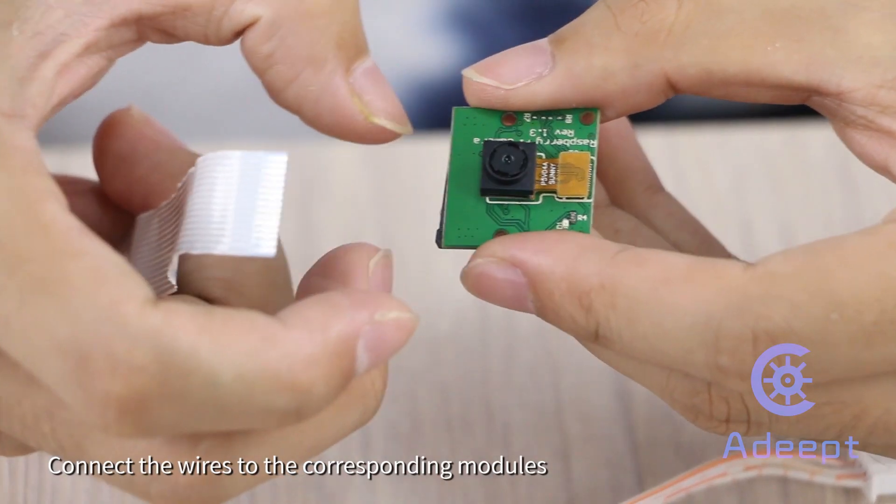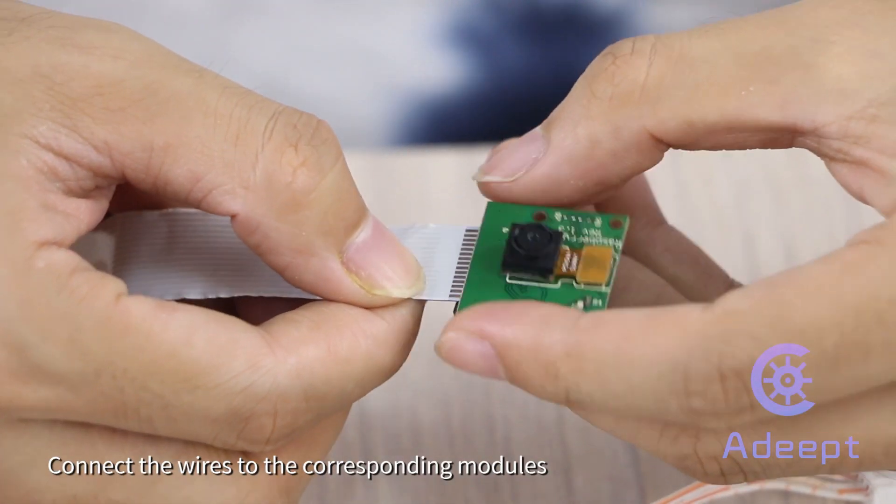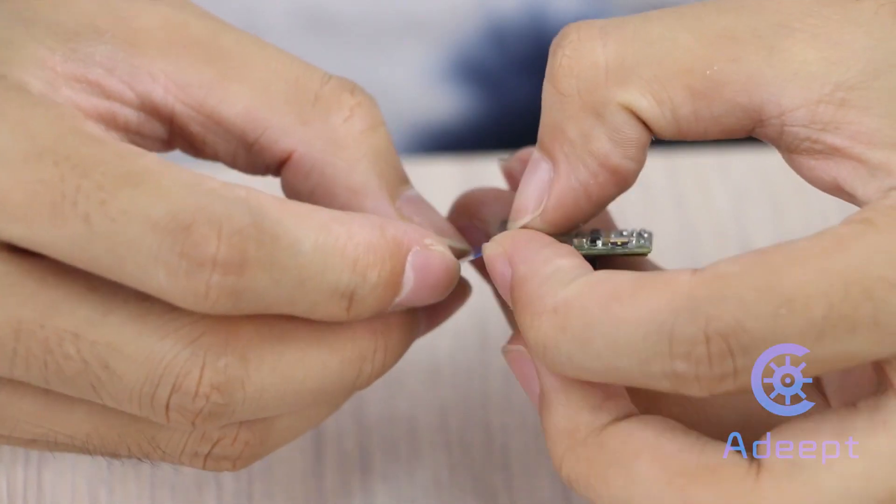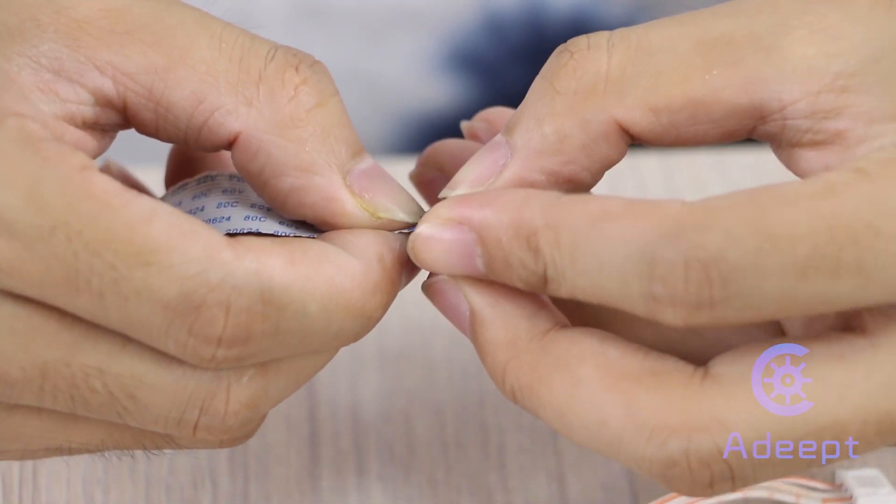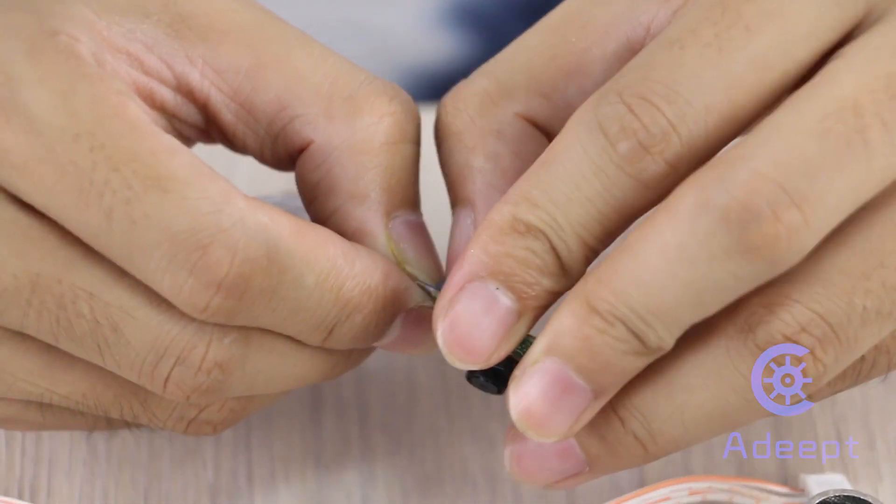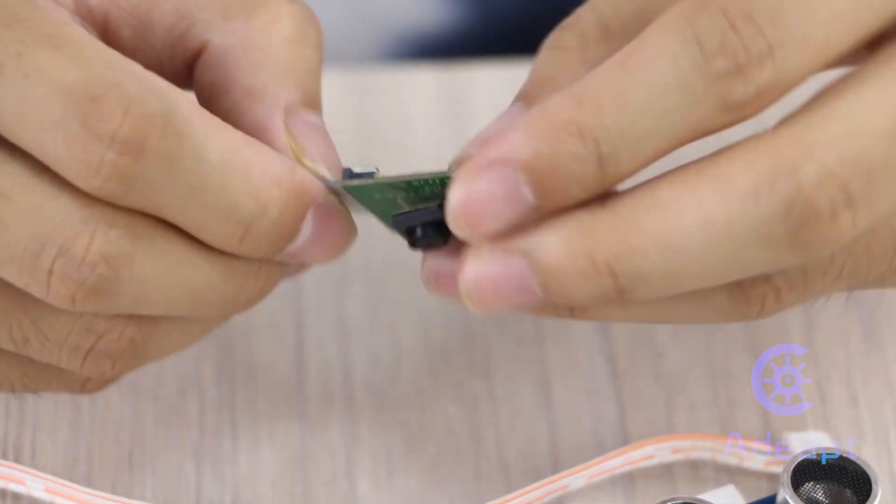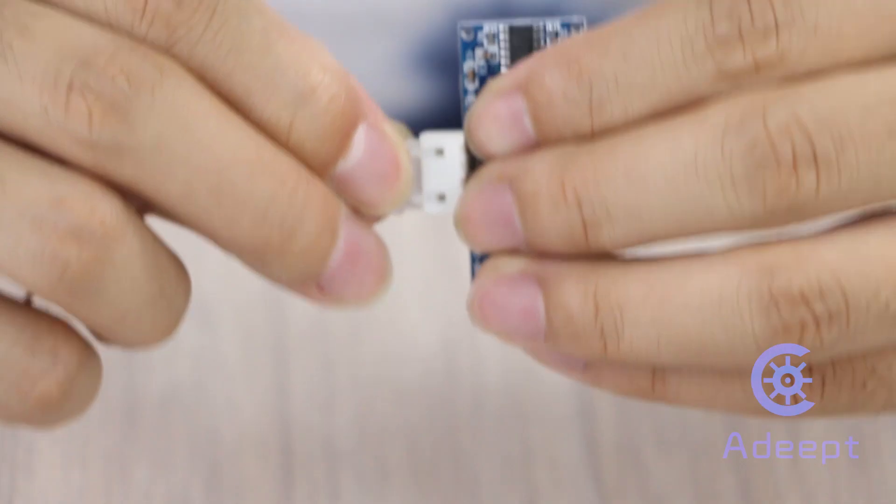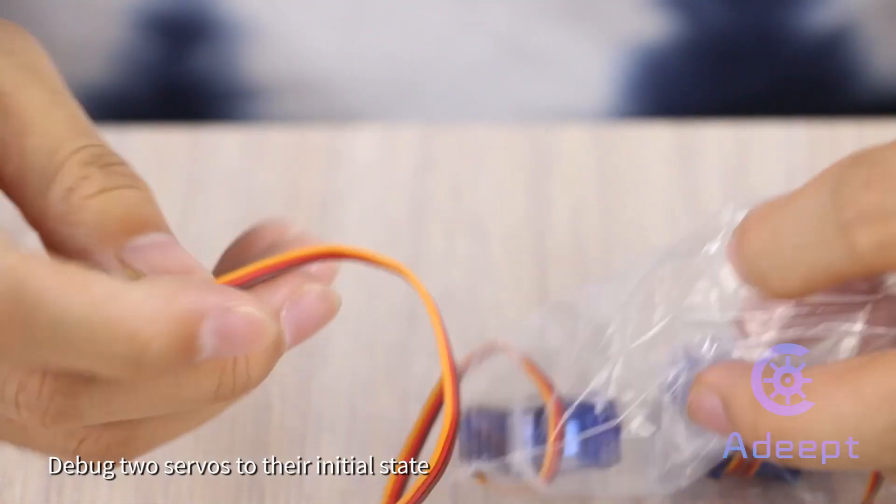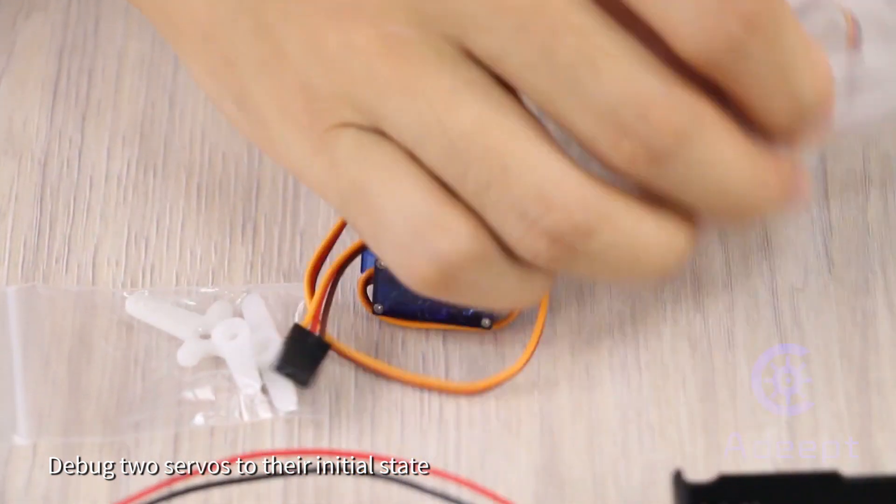Connect the wires to the corresponding modules. Then pack two servos to their initial state.